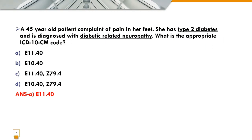First question: a 45-year-old patient complained of pain in her feet. She has type 2 diabetes and is diagnosed with diabetic-related neuropathy. What is the appropriate ICD-10-CM code? We can eliminate option E10 because, as the class guideline states, the E10 category is for type 1 diabetes mellitus, and this question is type 2.